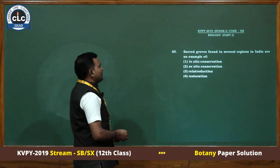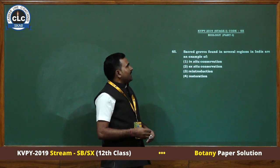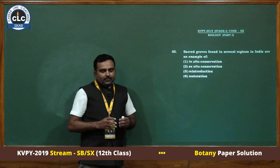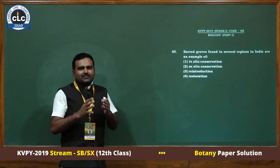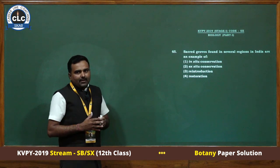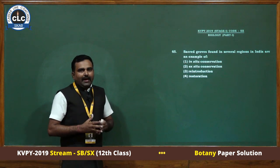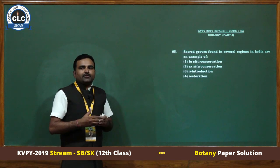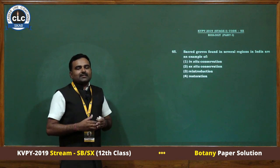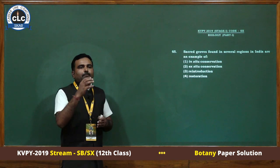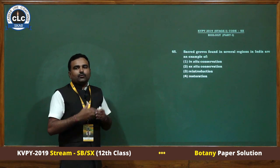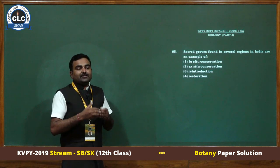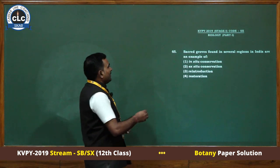Question number 65: sacred groves found in several regions in India are an example of — there are two techniques of biodiversity conservation: in-situ conservation and ex-situ conservation. In India, biodiversity conservation in-situ techniques include biospheres, national parks, wildlife sanctuaries, sacred groves, and hotspots. Hotspots are also a technique of in-situ conservation. So the answer is first.